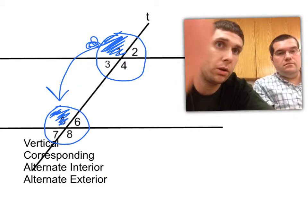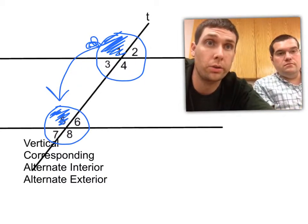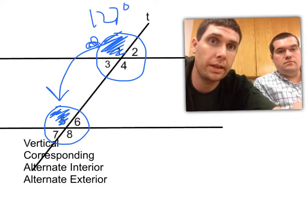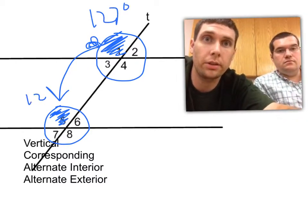That tells me angle 1 and angle 5 are congruent or corresponding. So if angle 1 was 127 degrees, that means angle 5 must also be 127 degrees.